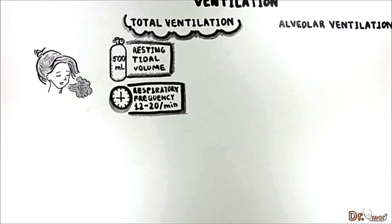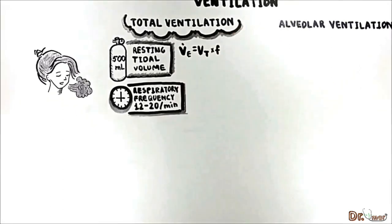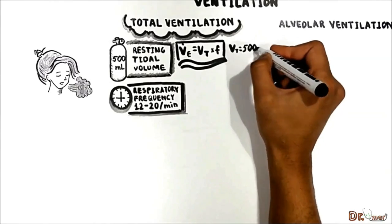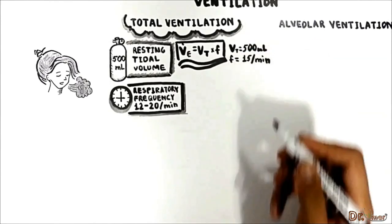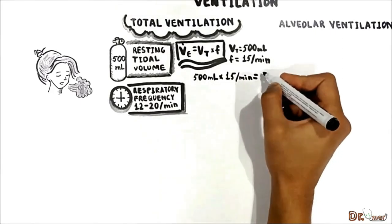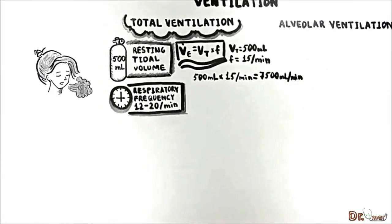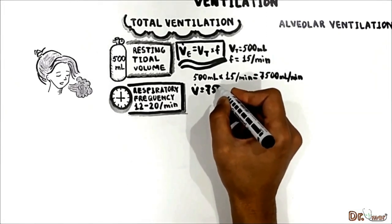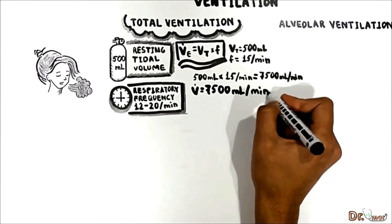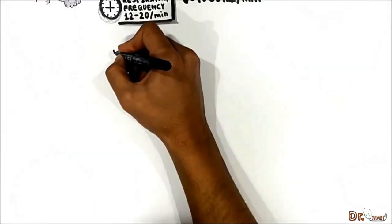Taking an average rate of 15 breaths per minute, total ventilation is calculated by the formula VE equals VT times f. Normal resting values would be 500 mils times 15 breaths per minute, equals 7500 mils per minute. This means that every minute your lung system receives 7500 mils of air.